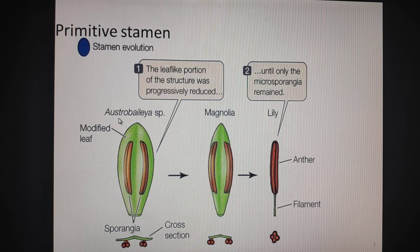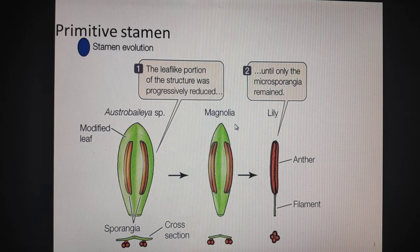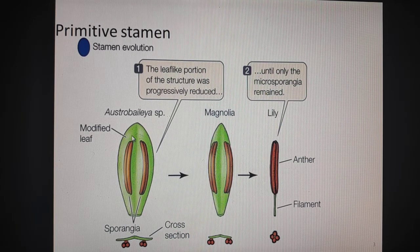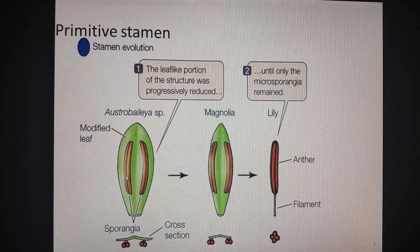As we can see in these primitive angiosperms — that is Austrobaileya species, Magnolia species, and another species called Degeneria — in all these species you will see the anther lobes, which are equivalent to the sporangia. They are modified over a flattened structure, a modified leaf which is a flattened, leaf-like structure on which these sacs were present.